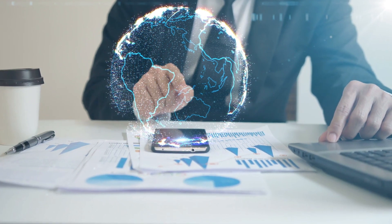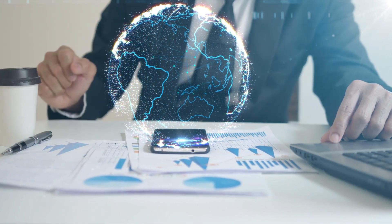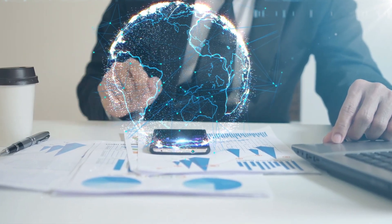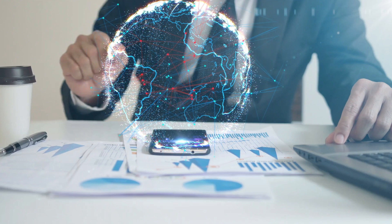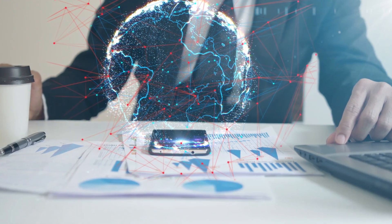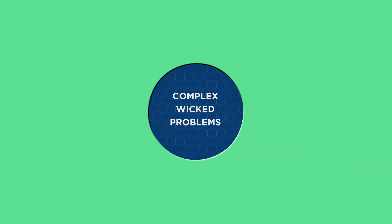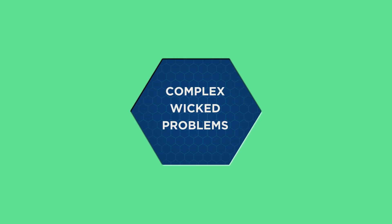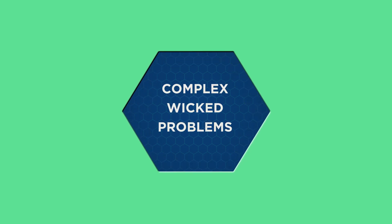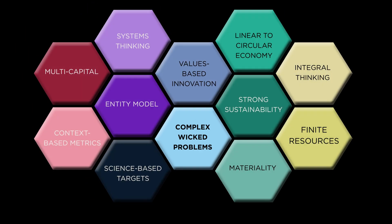Within the systemic holistic model, the scope considers the complex, wicked nature of the problem and entity being examined from a strongly sustainable perspective. Computer modelling is employed to solve complex, wicked problems and is one of Thrive Framework's 12 foundational focus factors.